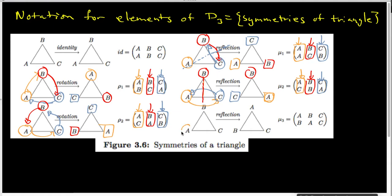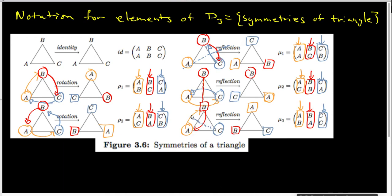Our last reflection works in exactly the same way as all of the other permutations. A starts here and lands there, so A went to B — that's what this column indicates. Then B starts here and lands here, so B went to A, and that's what this column indicates. And finally C starts here and ends there, so C didn't get moved, and that's what that column indicates. When we look at the geometry, we see that this is a reflection along the line of symmetry I have just drawn.